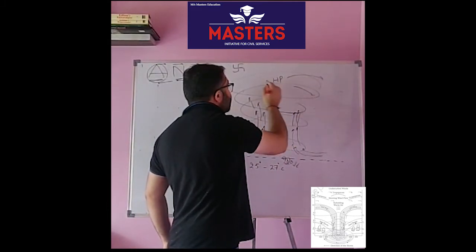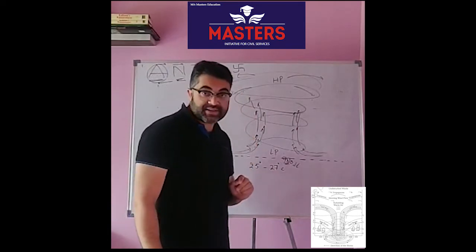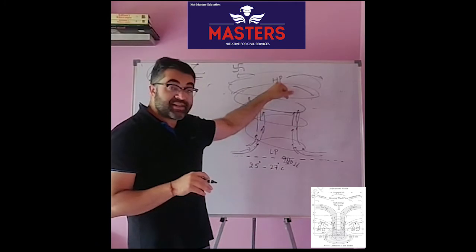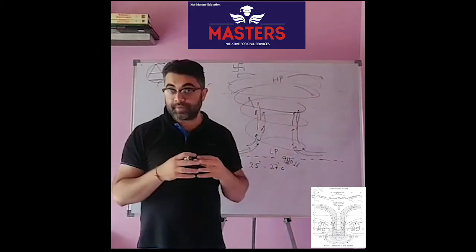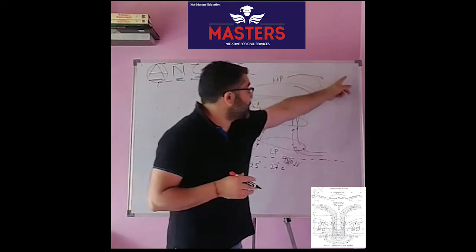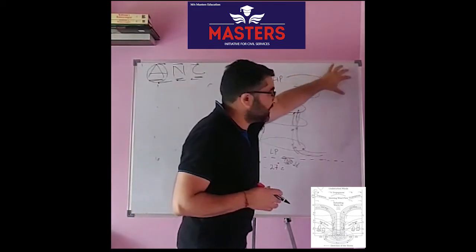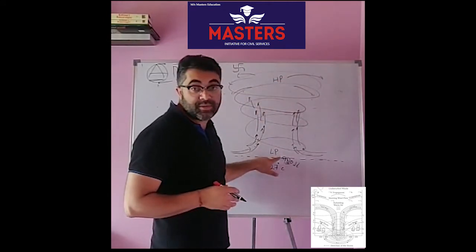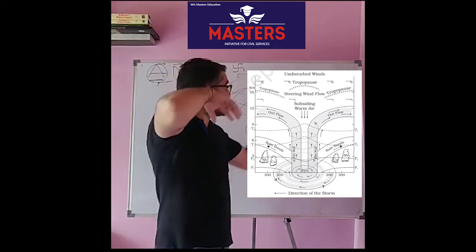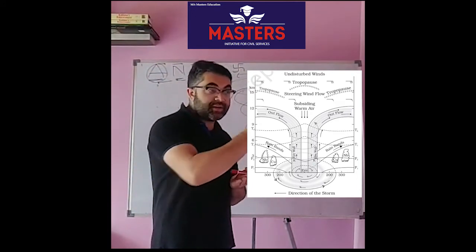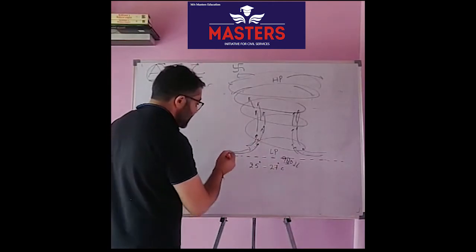One important point that confuses many people: the high pressure in the upper part is not higher than the low pressure at the surface. This high pressure is higher than its surroundings at a given altitude. For example, if it is found at nine kilometers above in the atmosphere, high pressure there is relative to its surroundings at that altitude — not in comparison to the lower part, which is always a low pressure zone.